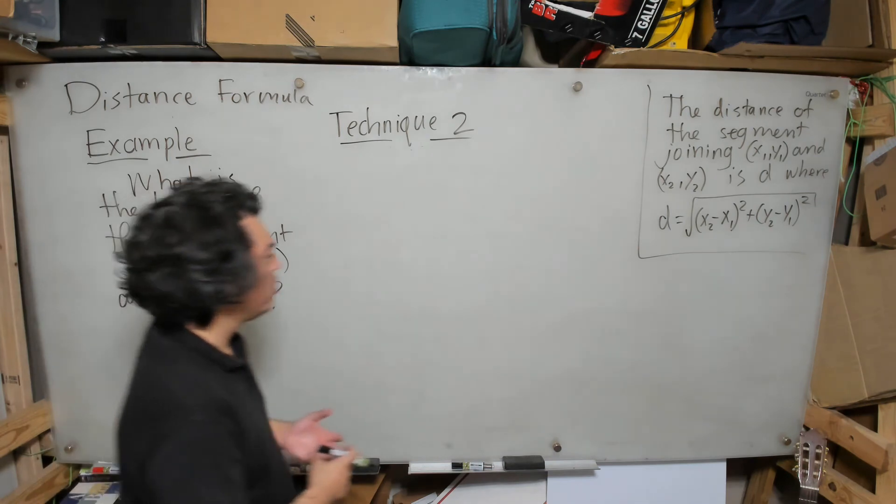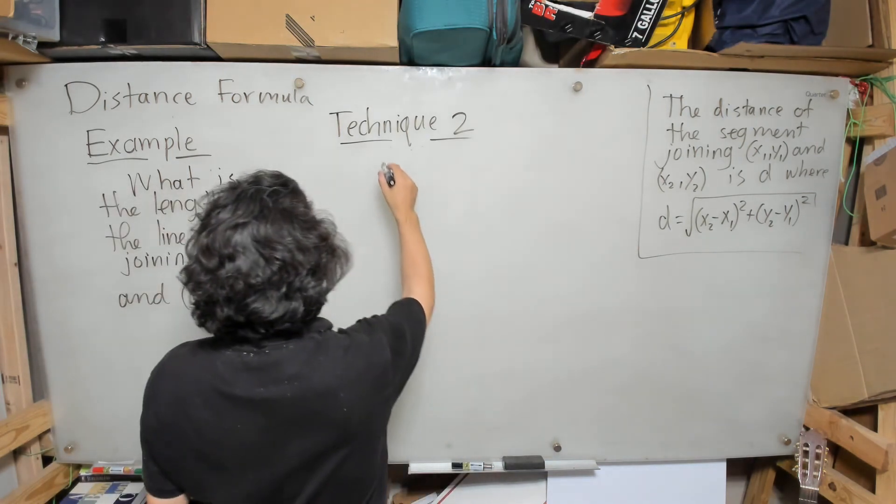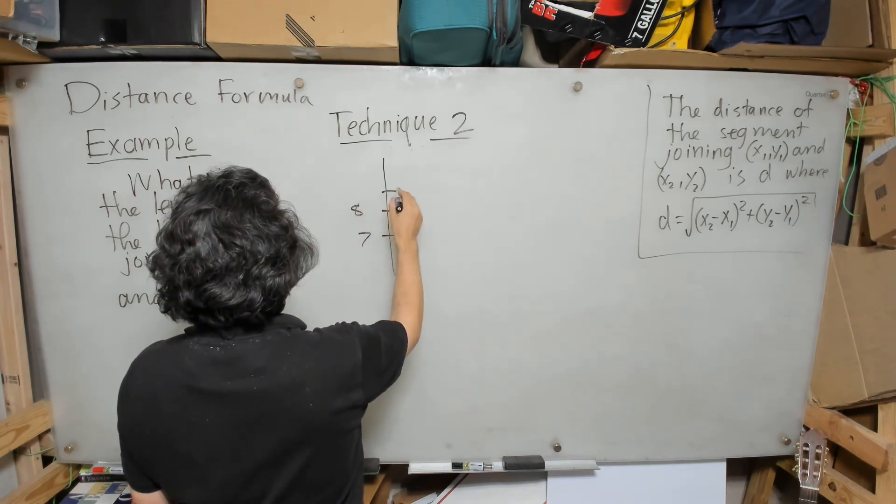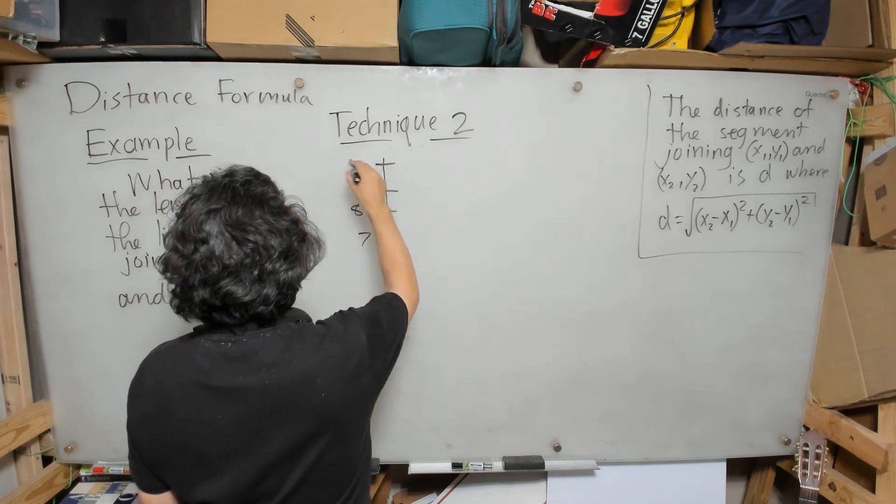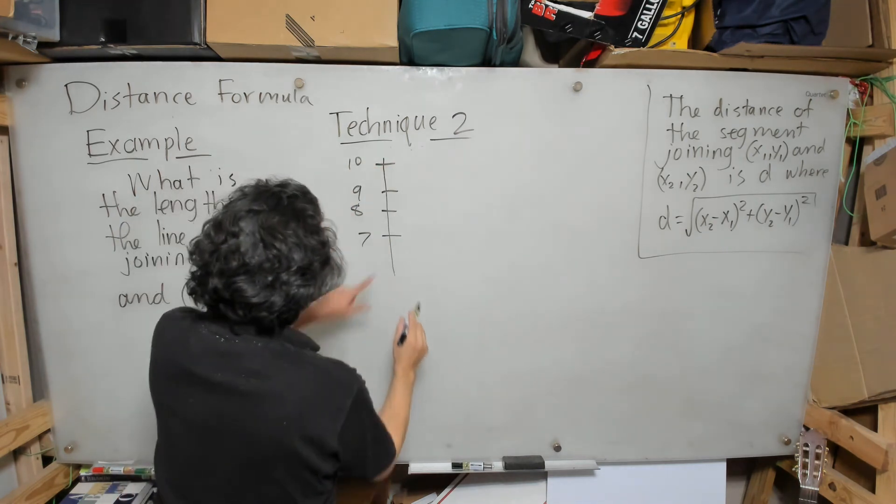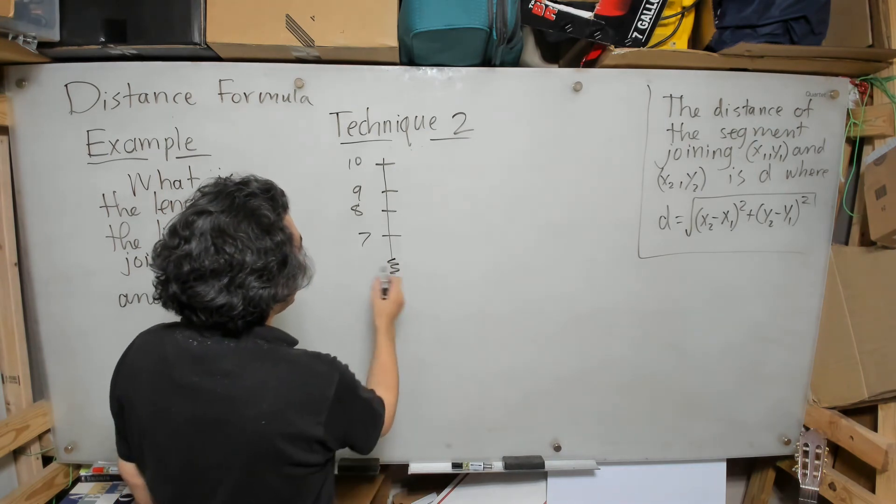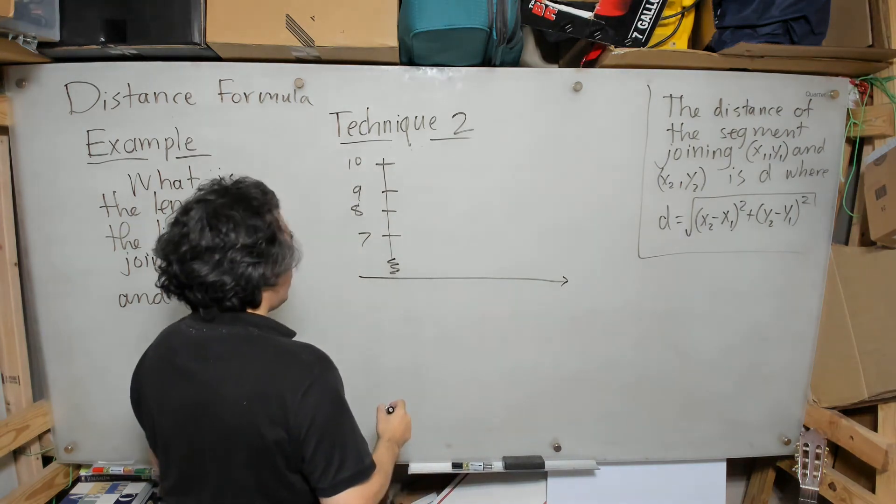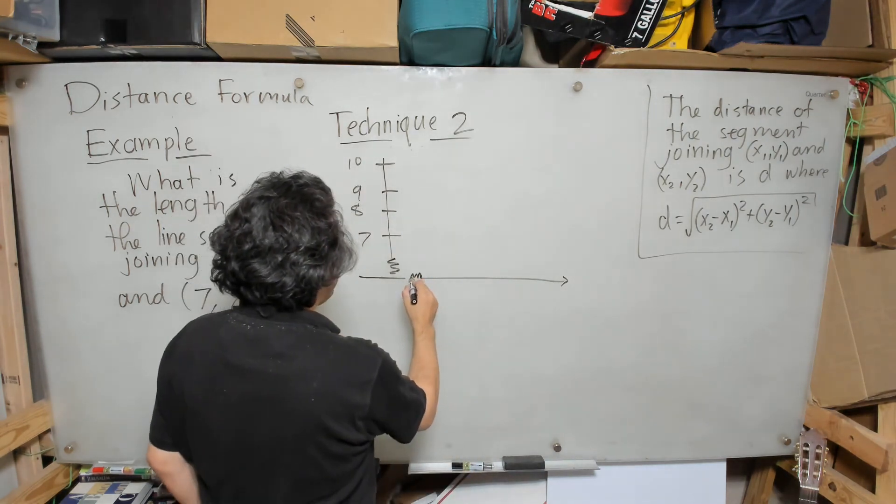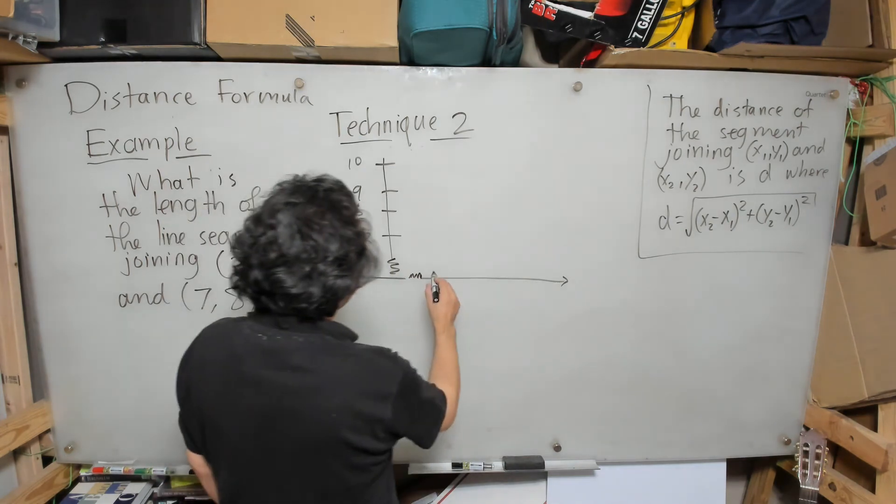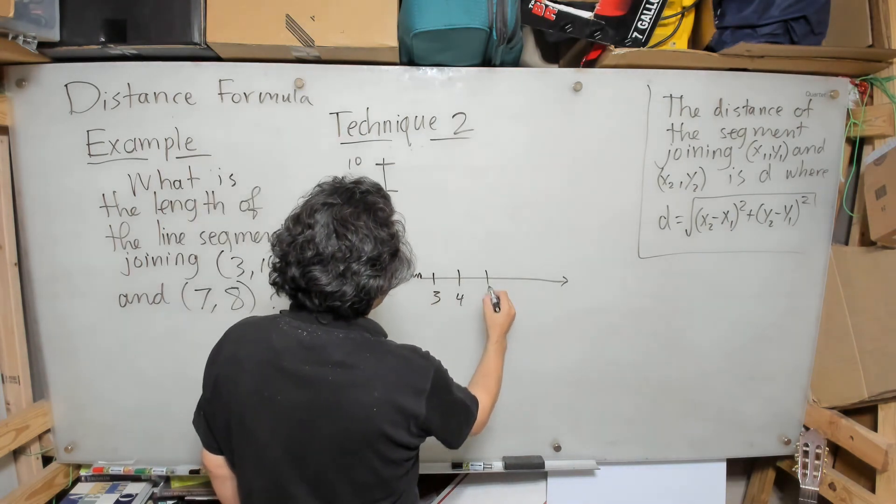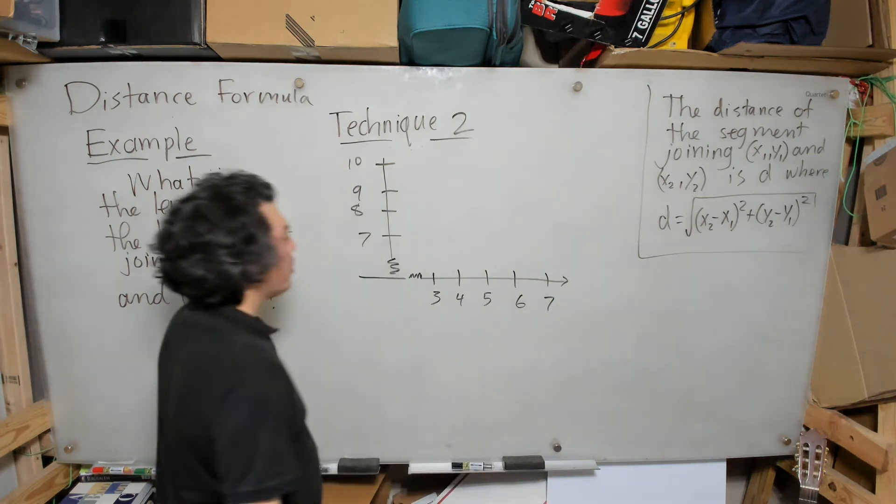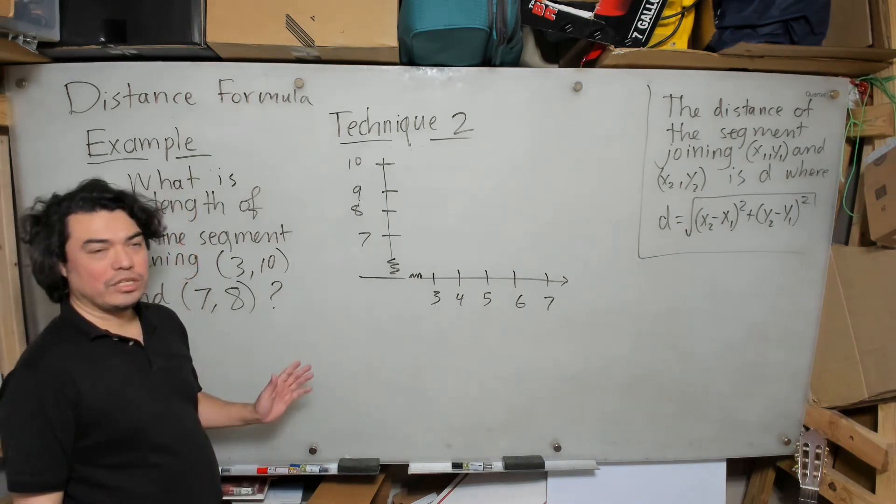I always like to draw my graphs in such a way that I'm focusing on the important details. Here, if you notice, I don't need any negatives. I only need y's in the range of 8 to 10, I only need x's in the range of 3 to 7. So if I wanted to, I can basically say this is my portion of my y-axis where it's like 7, 8, 9, 10, and then I can put like a little squiggly to indicate that it continues.